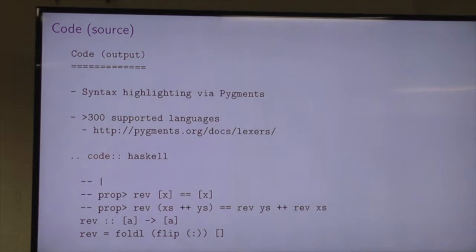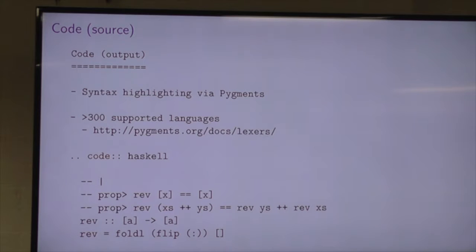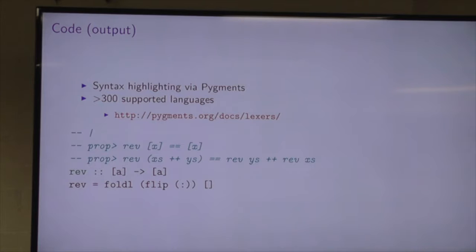Source code: this uses a directive — starts with double period, not a comment. This is the code directive, and the first argument is the name of the language, which the Pygments engine will use to determine which highlighting to apply. So this is code in Haskell — and on the next slide, there we have it: nice syntax highlighting for our Haskell code. Pygments supports 300 different languages.